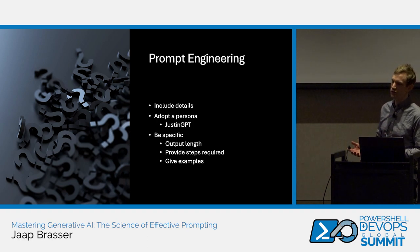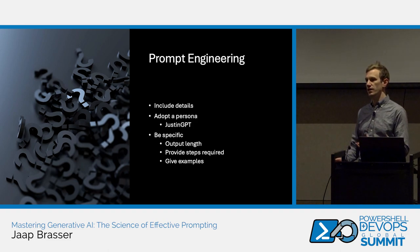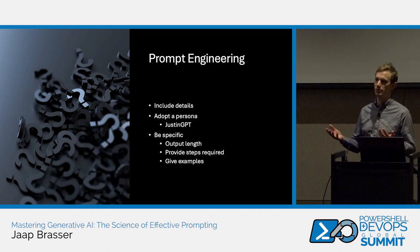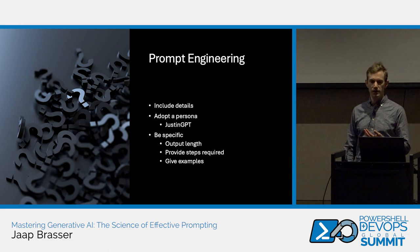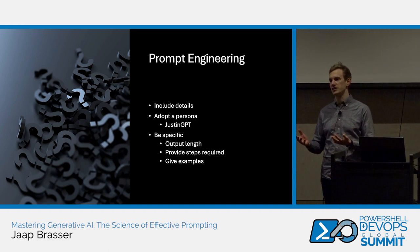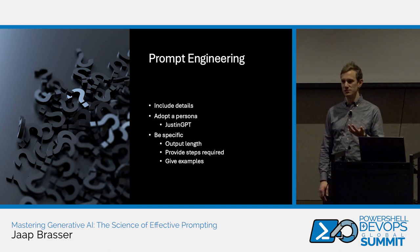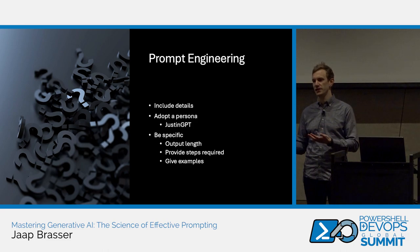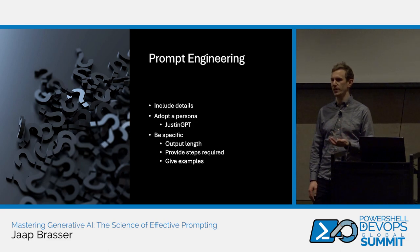Be specific — not only about what you want, but also about what you expect to get out of it. If you're asking for a script, tell it how big it should be, should it have parameters, should it be an advanced function, a script file, or a module. Also validate that it understands what you are asking. Instead of immediately asking it to provide code or documentation, verify that it understands your request. You can do this by saying 'before answering, confirm that you understand the request' or 'before answering, ask me a question if it helps you clarify what I'm trying to achieve.' Those are all techniques that can help you get better results.